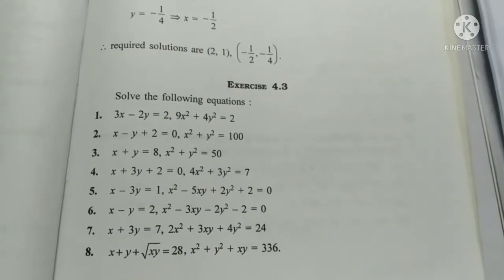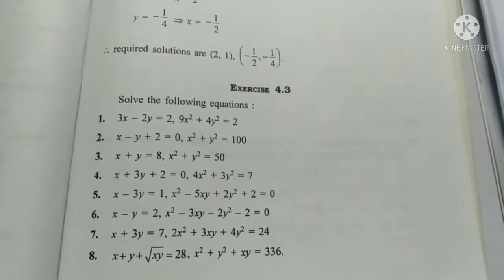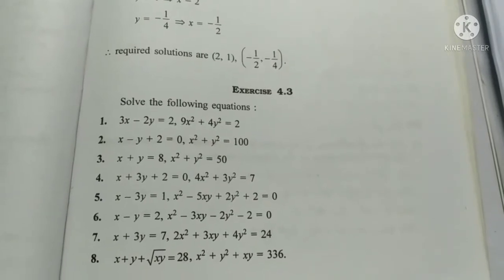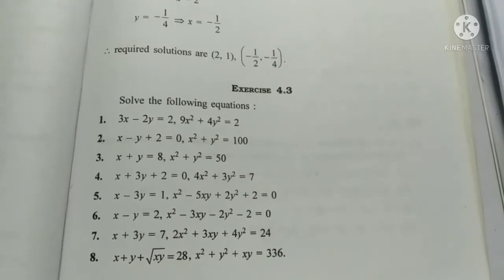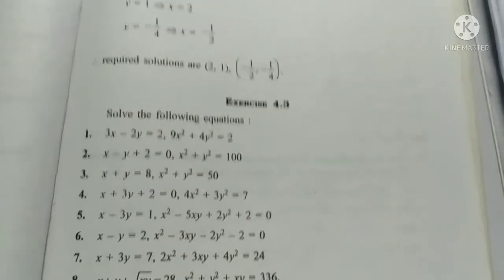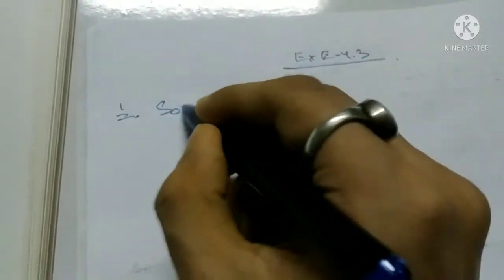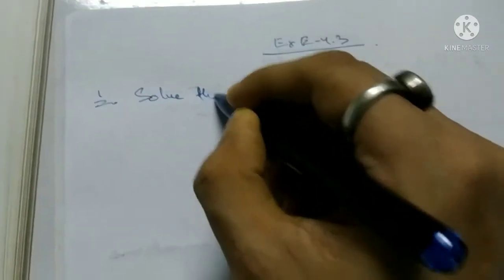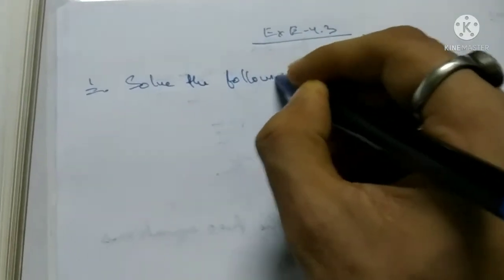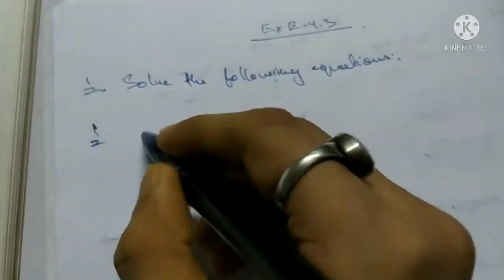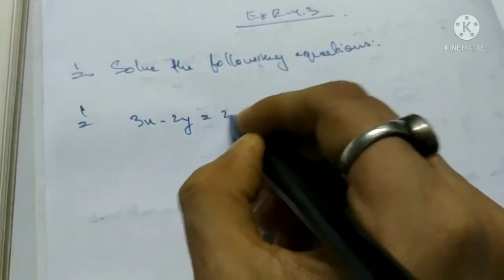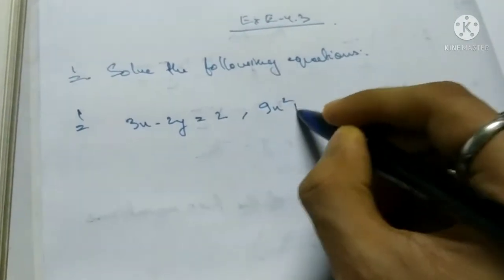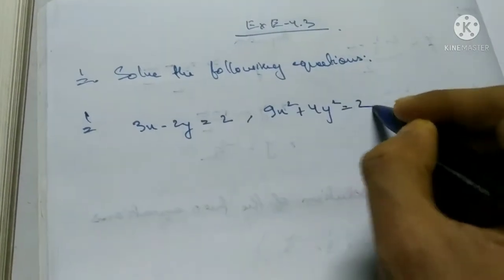Hello students of class 10, this is your advanced mathematics exercise 4.3 type 1: solve the following equations. First one: 3x minus 2y equals 2, and 9x squared plus 4y squared equals 2.